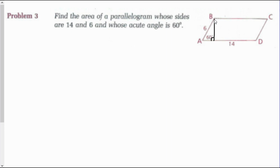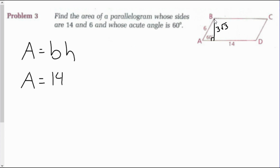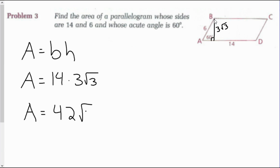The side opposite the 60-degree angle is 3√3, which is my height. Now the area of the parallelogram equals base times height: base of 14 times height of 3√3. So 14 times 3√3 gives an area of 42√3 units squared.